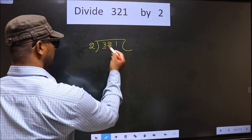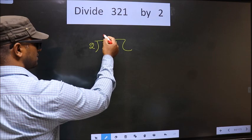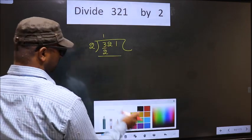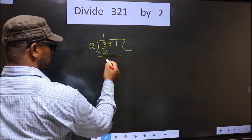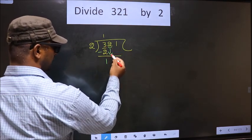Now here we have 3 and here 2. A number close to 3 in the 2 table is 2 1s 2. Now you subtract. 3 minus 2 is 1. Now you bring down the beside number. That is 2 down.